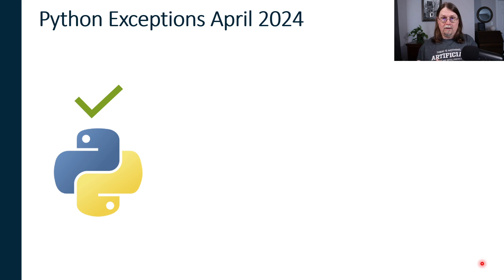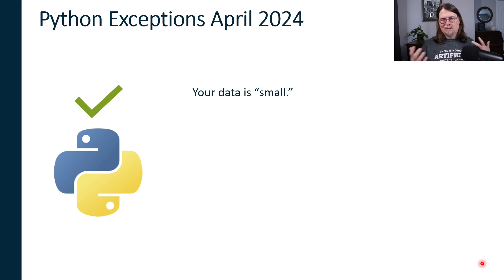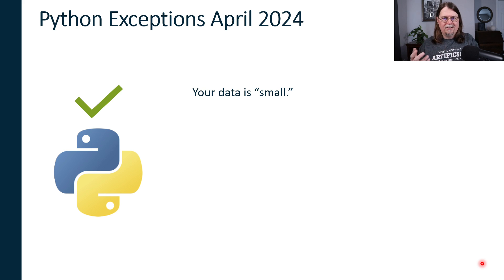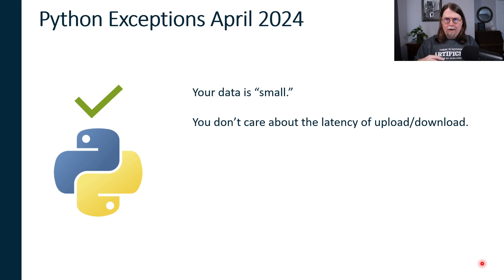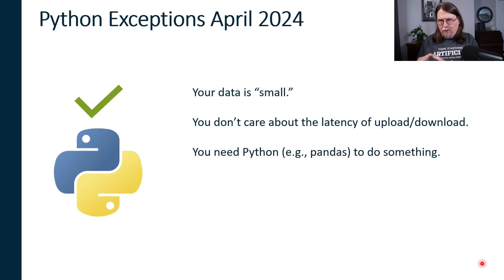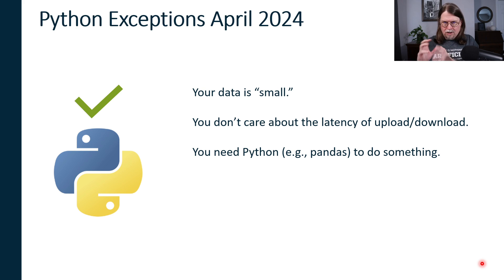That being said, there are some exceptions — there always are in technology. You might want to use Python for data wrangling if your data is small. Small and large data, big data, these are all relative terms. But if it's 100,000 rows or less, that's reasonably small, and you can actually move that data up and down from Azure relatively fast if you have a good internet connection. Also, if you don't care about the latency — the time it takes to move things up and down — then you don't need to worry about it. Another consideration is if there's something specifically you need to do to wrangle your data, to clean or transform it, and Python is the best way to do that — for example, using the Pandas library in Python, which allows you to work with entire tables of data. Sometimes it's just easier to do certain things in Python, and if that's the case, you might want to use Python and Excel for your data wrangling.